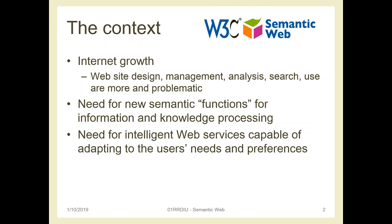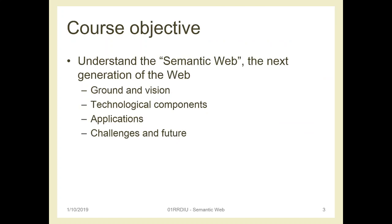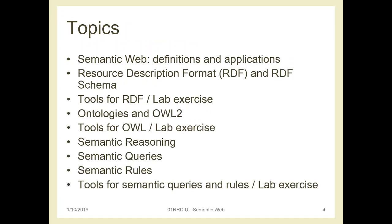The objective of the course is to understand what is this semantic web, this web of linked data, which is the current or next generation of the web. We will see the vision, why it has been developed, what are the main technological components — we will have an overview of all of them with more stress on some. We will also see examples of existing applications and talk about the future and challenges.